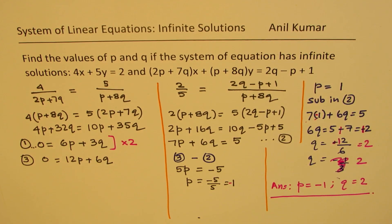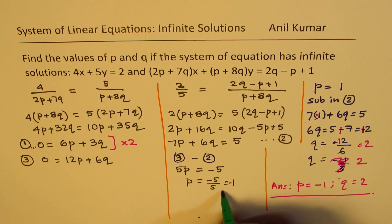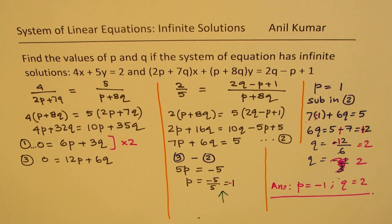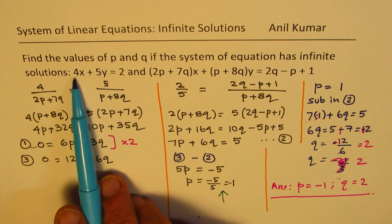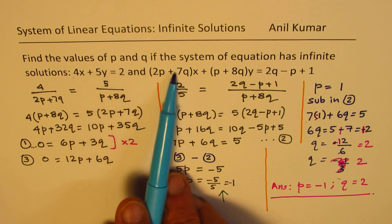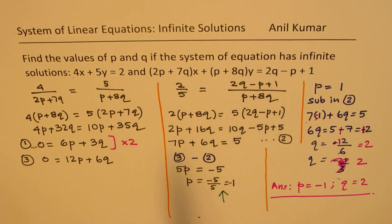That is how we solve this particular question. I did make a sign mistake earlier but we got it right. I hope this helps. The key strategy is: if we have a system of equations, the ratios of the coefficients of x and y should be equal for both equations, and their y-intercepts should also be equal. That's the whole idea. Feel free to write your comments, share your views, and if you like, subscribe to my videos. Thanks for watching and all the best.